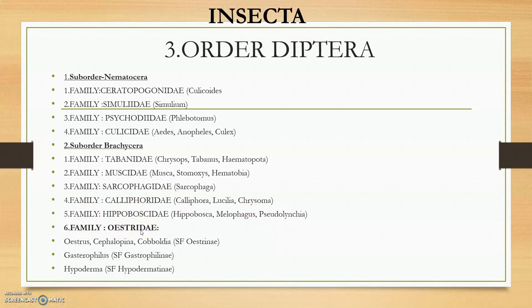The sixth family is Oestridae, which is a very important family. Under Oestridae we have subfamilies: SF Gastrophilinae, SF Hypodermatinae, and others. Under these three subfamilies we have genera Hypoderma, Gasterophilus, Oestrus, Cephalopina, and Cobboldia.